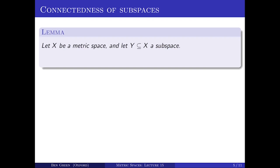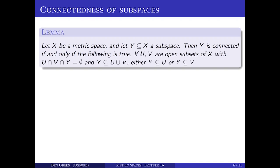Let X be a metric space and take a subspace Y of X. Then Y is connected as a metric space if and only if the following is true: if U and V are open subsets of X such that U ∩ V ∩ Y is empty, and if Y is contained in U ∪ V, then either Y is contained in U or Y is contained in V.